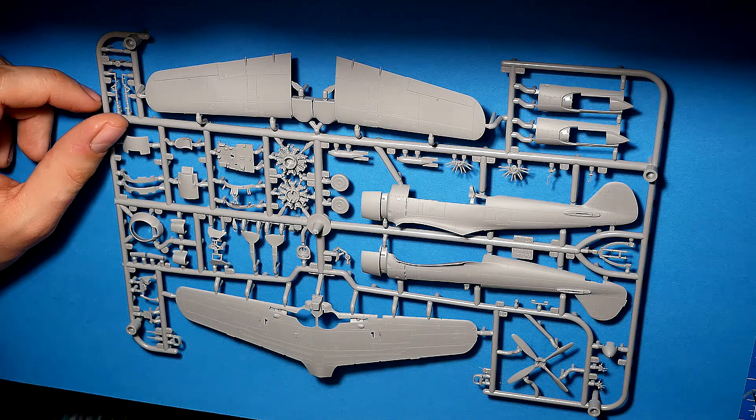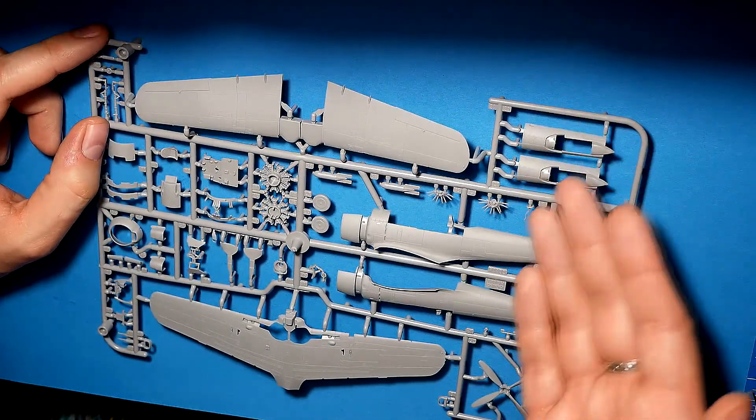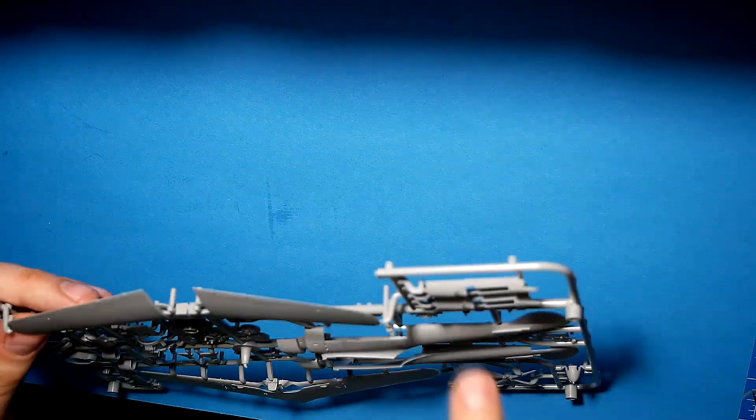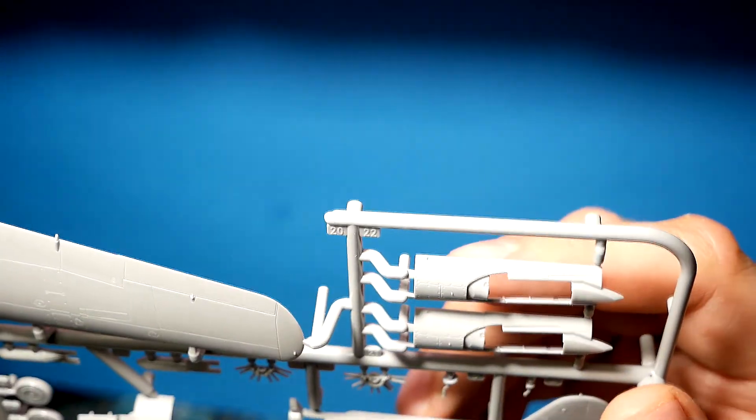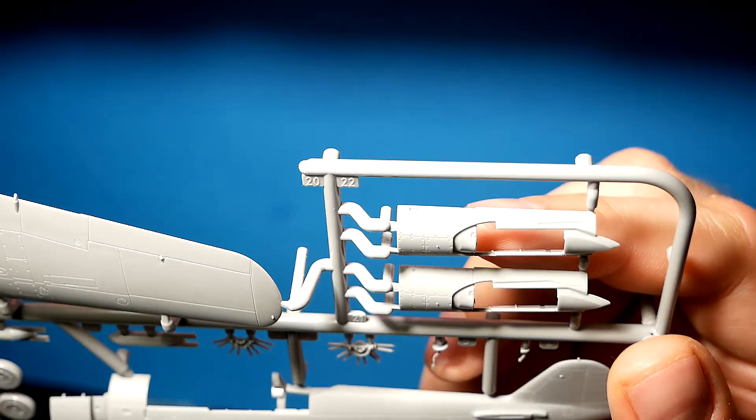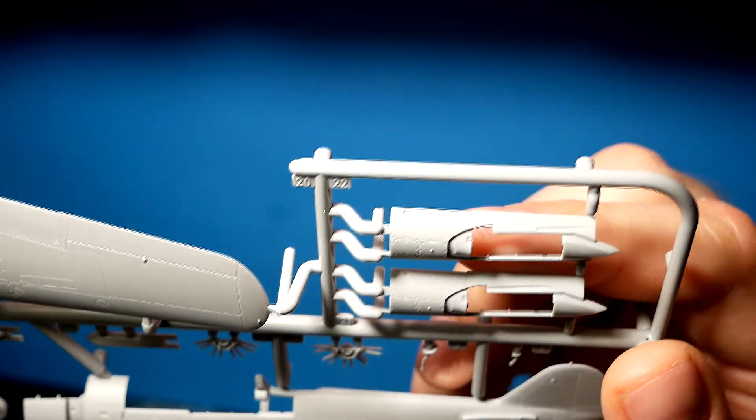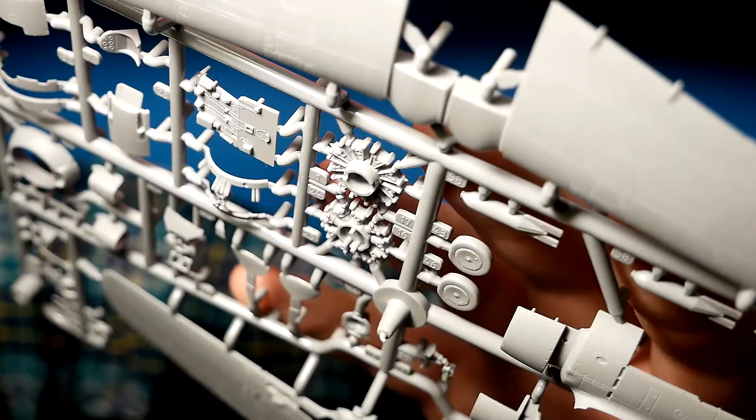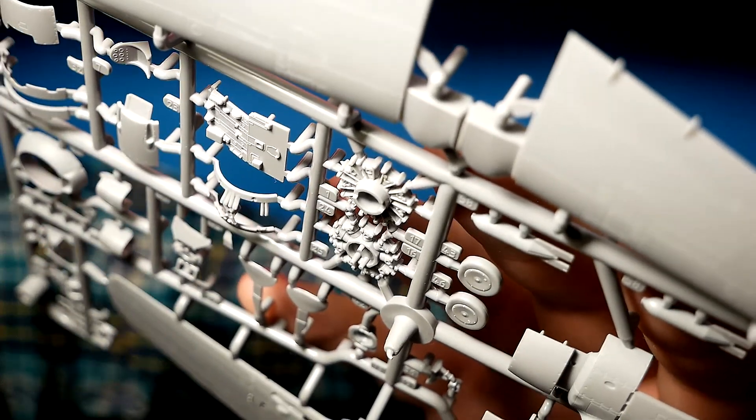Engine cowling, propeller, upper part of the fuselage in two variants only as a result of that small hole. Probably that is the only difference between them. Engine, cockpit interior, pilot seats, and so on.